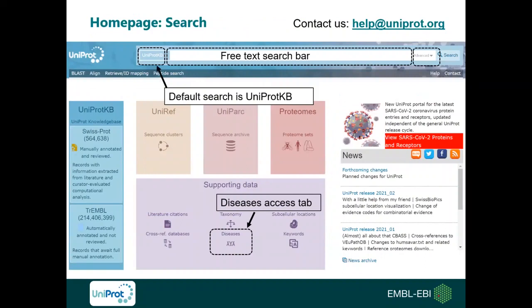To access one of the protein entries, you go to the UniProt main page and search your protein of interest in the free text search bar, or you can use the advanced button on the right where you can refine your search for organisms or search for specific terms such as Alzheimer disease. You can also access UniProt resources with the quick access tabs below the search bar, and access disease information with the disease access tab where diseases described in UniProt are listed in alphabetical order. If you have any queries or feedback, please write us at help@uniprot.org.